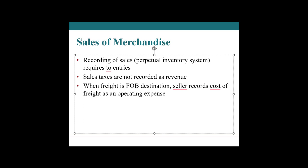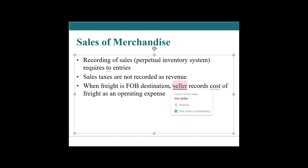Also, friendly reminder that when the freight is FOB destination, the seller records the cost of the freight as an operating expense, because the seller is on the hook until it gets to the destination. Interestingly, when you're buying it, freight is a cost of goods sold because it's part of inventory. But when you're paying it as a seller, it's an operating expense — it goes underneath cost of goods sold, in between gross profit and net profit.